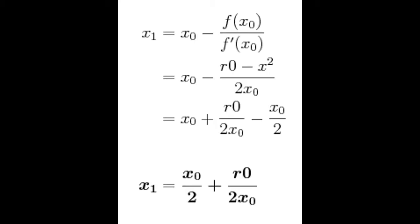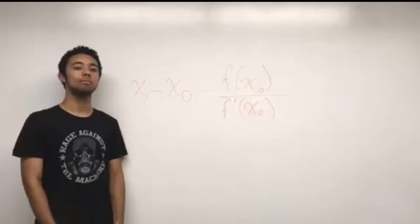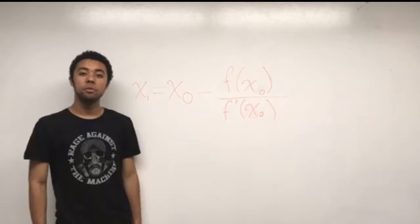Tangent lines are used to approximate zeros on the function. One can determine the root of the function with a tangent line throughout a series of sequential approximations.